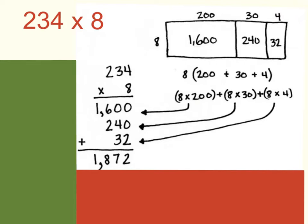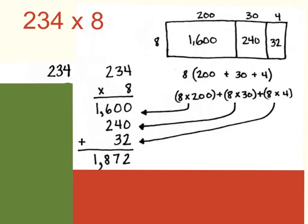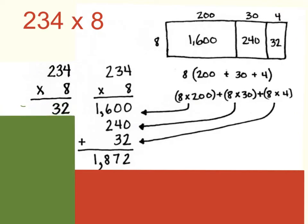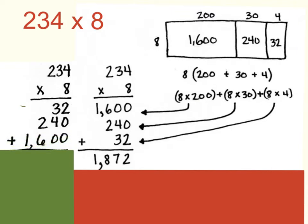Let's go ahead and solve this problem using partial products now. So we start in our ones place and we multiply 8 times 4, which will give me 32. Next we move to our tens place. 8 times 3 tens will give me a product of 24, but we're in our tens place, so that's 24 tens, which would be 240. And then finally, we move to our hundreds place. 8 times 2 hundreds — so 8 times 2 is 16, so we have 16 hundreds, which would be 1,600. Add all of those together and you get a final product of 1,872.